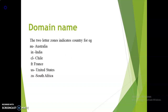Some websites have a two-letter zone. For example, .in and .us — these identify the country name, such as India, France, United States, South Africa, etc.